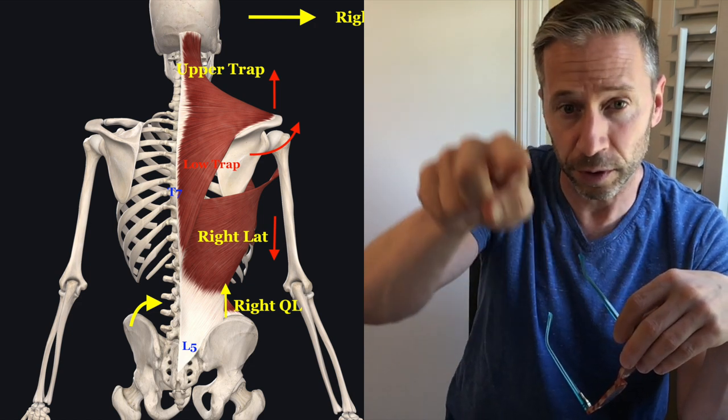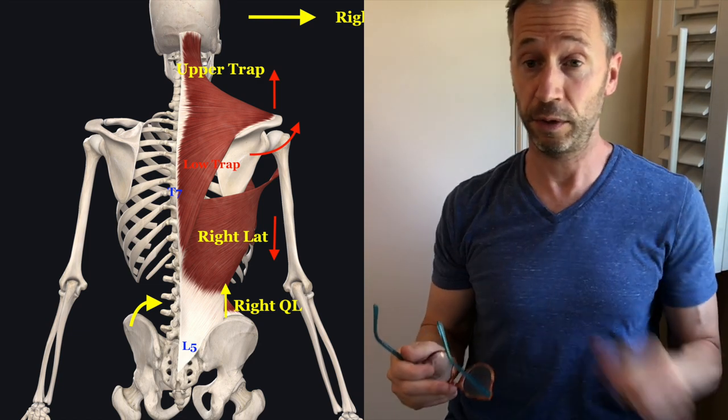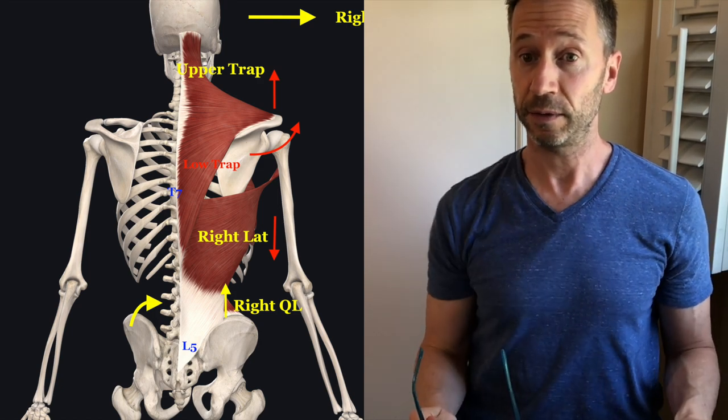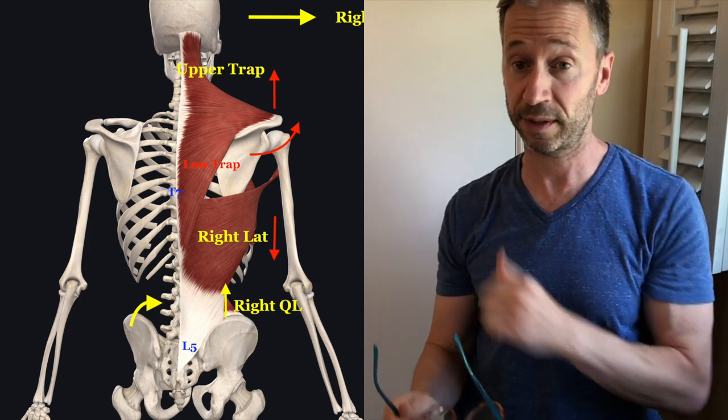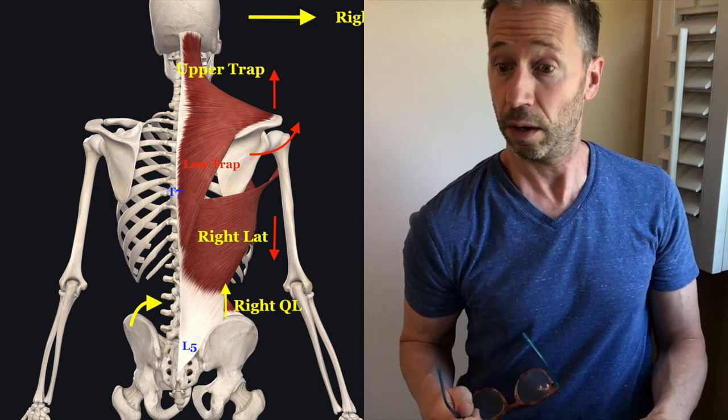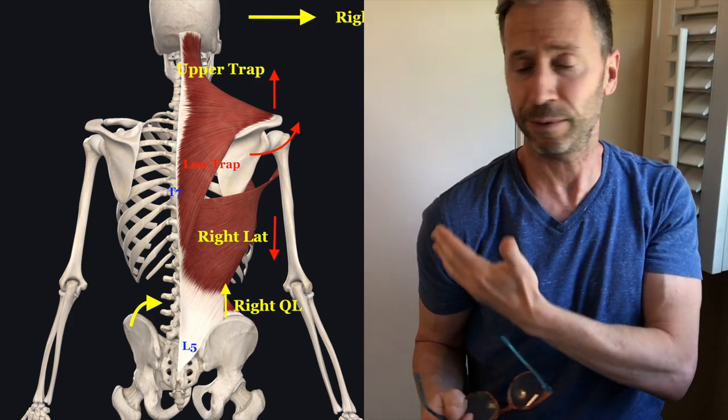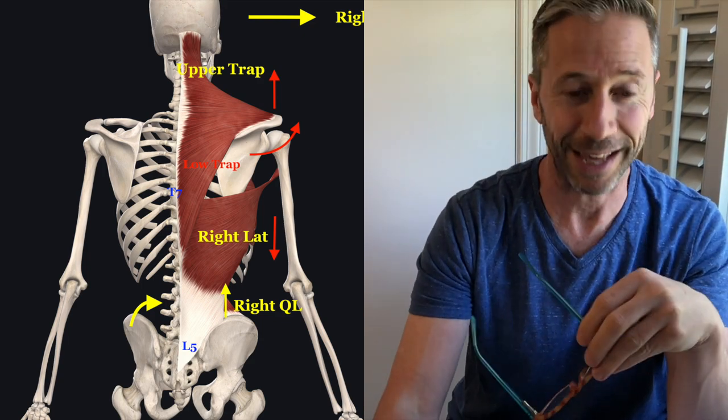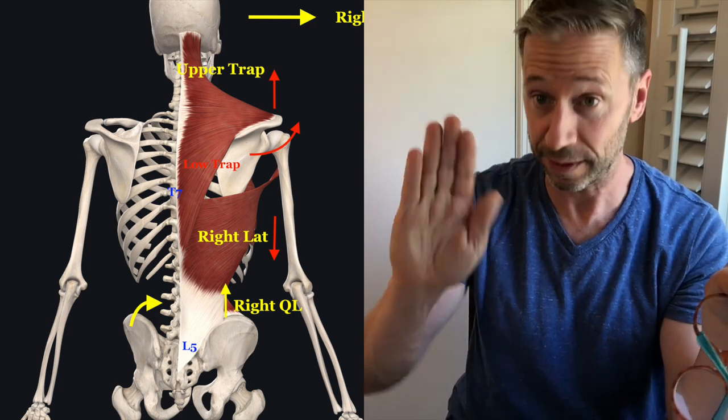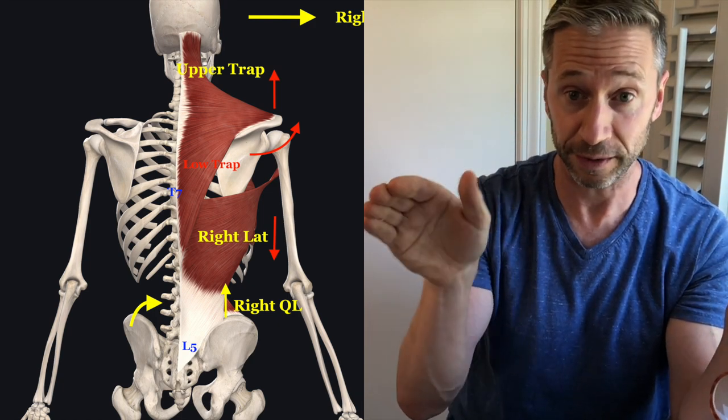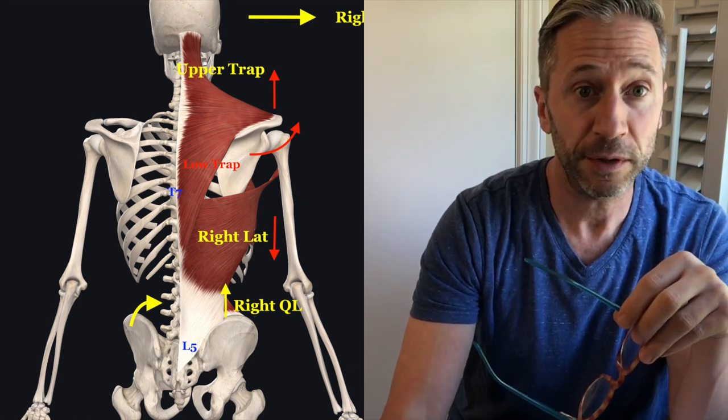The right scapula is coming away from the spine, coming forward. That right shoulder is coming forward, and the right scapula is winged, protracted, and internally rotated.